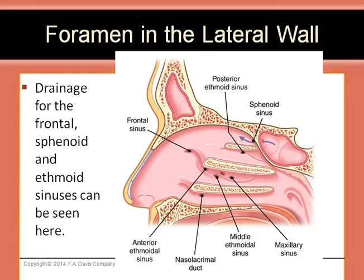The space above the superior concha is the recess into which the sphenoid sinus empties. The middle nasal meatus is where the emptying occurs for the frontal sinus, the anterior and middle ethmoidal sinuses, and the maxillary sinus. The nasolacrimal duct empties into the inferior nasal meatus.